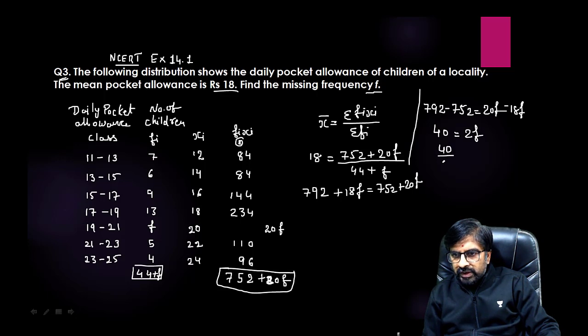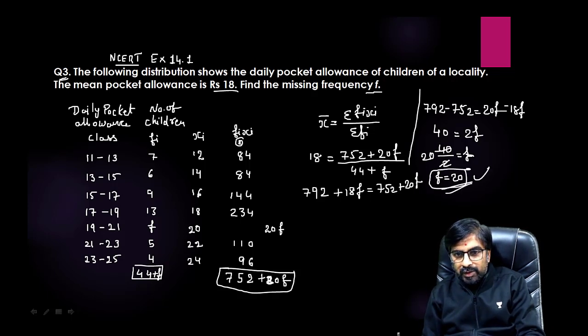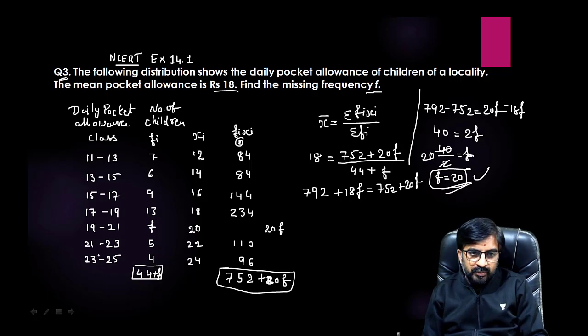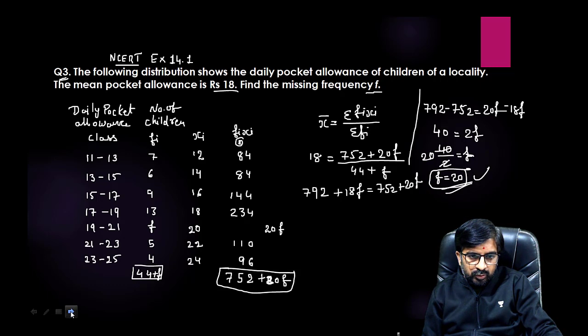40 by 2 equals f, so f will be 20. This way we can solve this. The missing frequency f equals 20. If you like this, please subscribe. Now we are going to solve question number 3 and 4 also. For more such videos, subscribe my channel and moving towards question number 4.